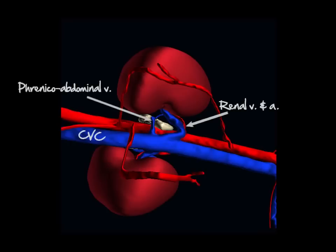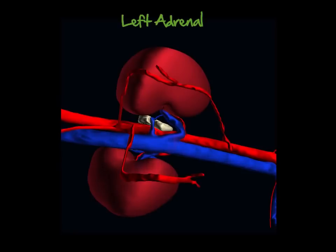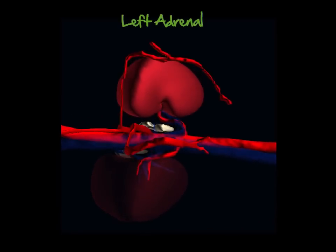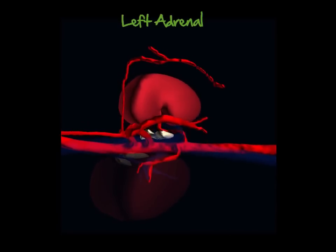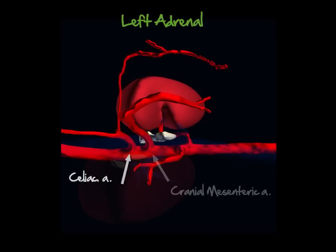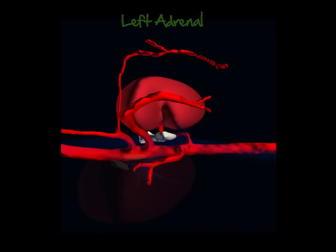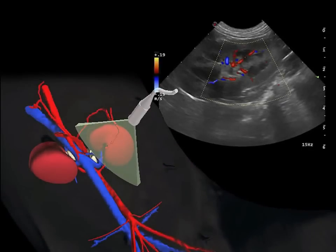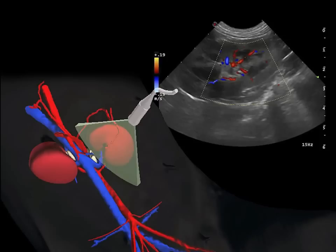Being able to recognize the vessels close to each adrenal gland will ensure that you can identify them with certainty. A convex probe is generally used to assess the left adrenal gland, at least initially. Color Doppler can help you identify the vascular structures in the region of the left kidney, which in turn helps to identify the adrenal gland.